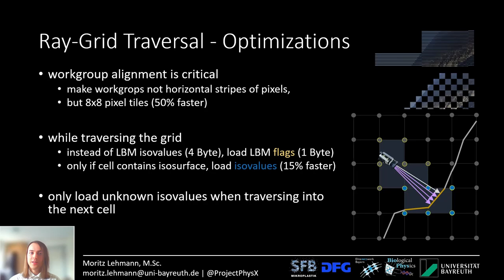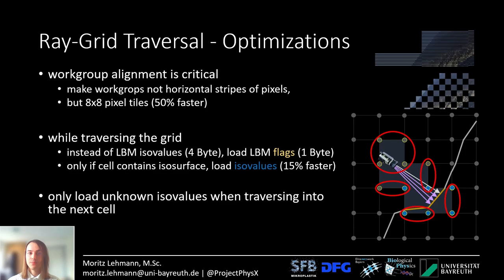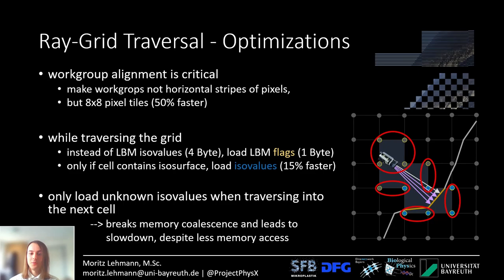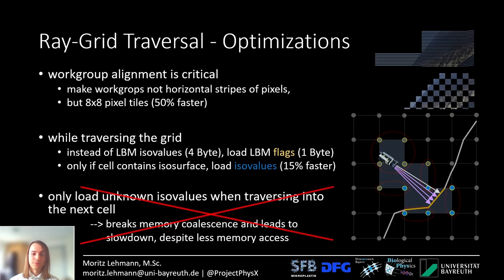You might also think to load only the new unknown ISO values when traversing into the next grid cell, using a lookup table. However, this has a large drawback: the compiler is confused by this memory access through a lookup table and you lose coalesced memory access. So despite having much less memory access overall, performance is much lower. This trick unfortunately doesn't work.